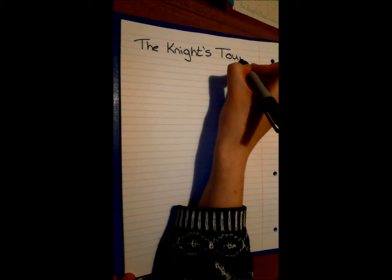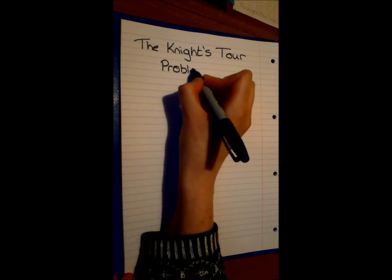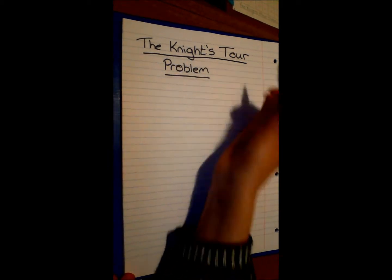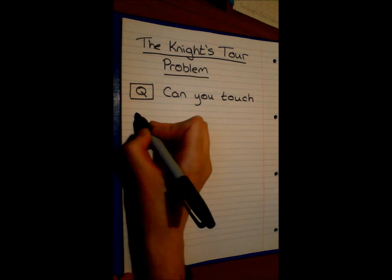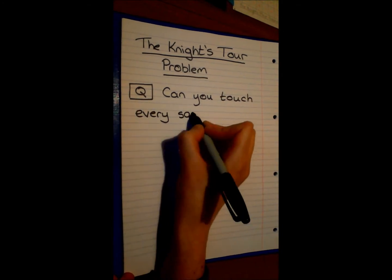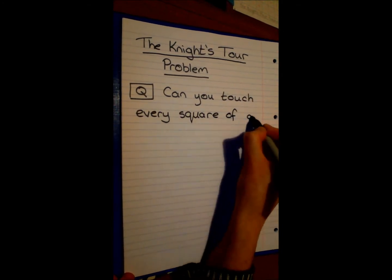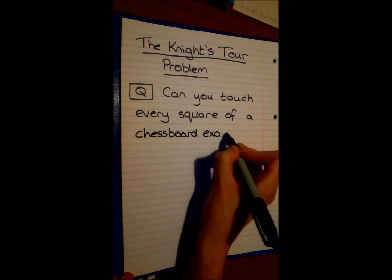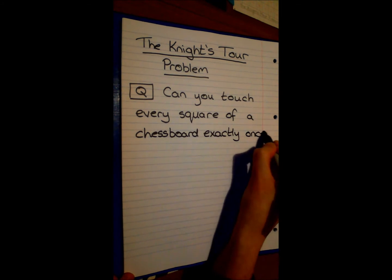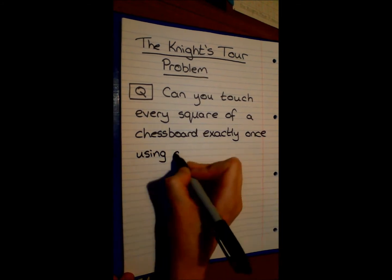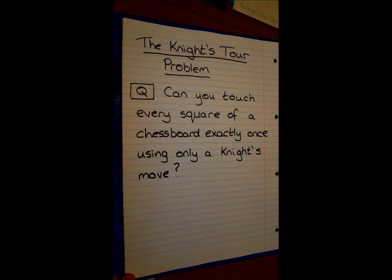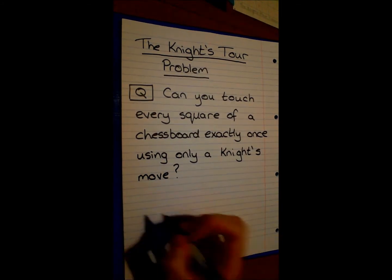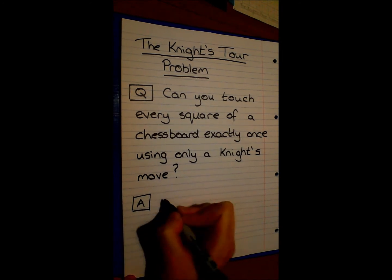Today we are going to go through some of the maths involved in the Knight's Tour problem. So what is the Knight's Tour problem? The problem asks the question: can you touch every square of a chessboard exactly once using only a Knight's move? The answer is simply yes.